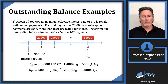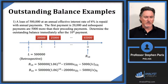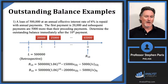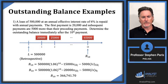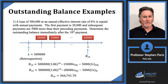Both of those expressions are natural ways to calculate the accumulated value of the arithmetically increasing annuity and therefore the balance at time 10. You'll need to work through your calculator steps — either approach gives the same answer. The result is $366,741.70.